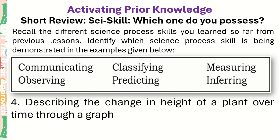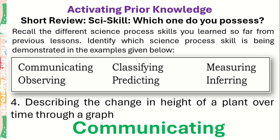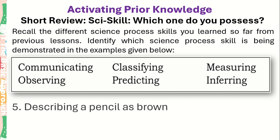Number 4: Describing the change in height of a plant over time through a graph. What is the correct answer? Number 5: Describing a pencil as brown. What is the correct answer?